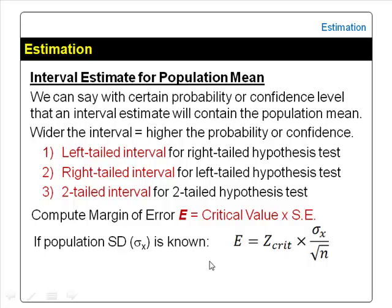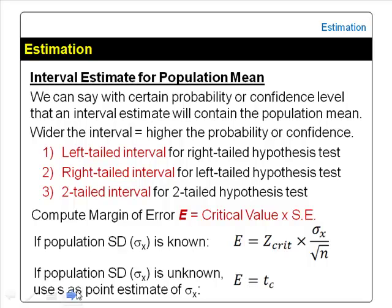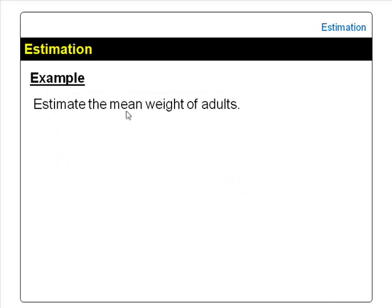If the population standard deviation is unknown, we will use the sample standard deviation as a point estimate for the population standard deviation, and use T-critical as the critical value. T-critical depends on the level of confidence, type of test, and also sample size n, to determine the degrees of freedom.